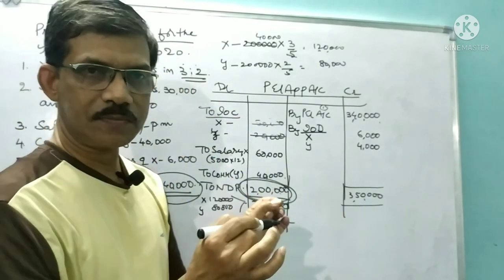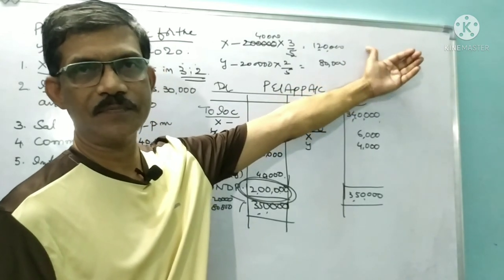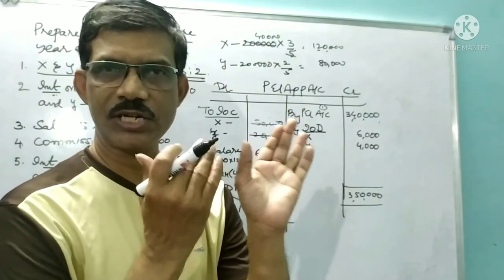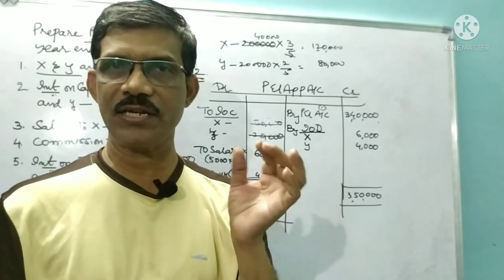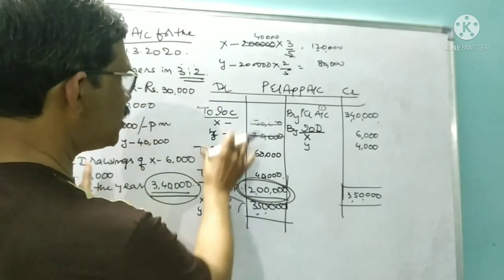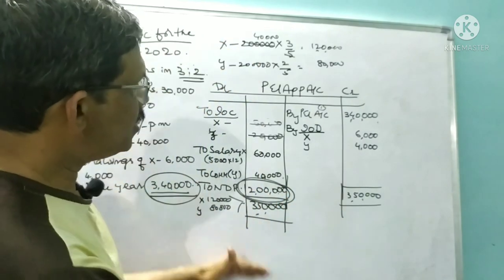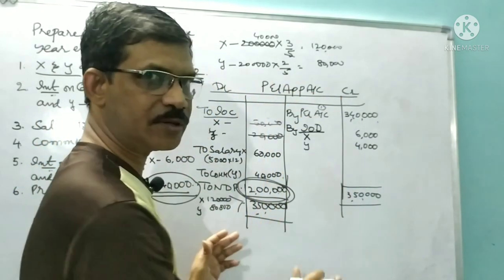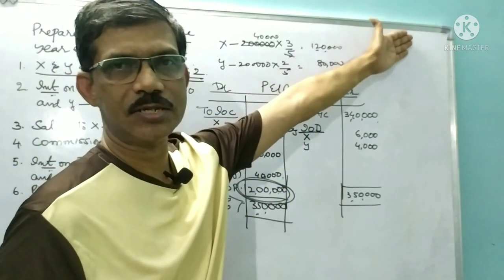How to rectify the mistakes in P&L appropriation account? We will discuss that in the past adjustments topic. P&L appropriation account is an extension of profit and loss account. The objective is to calculate net divisible profit, distributed to partners in the agreed ratio. If any mistakes are committed in P&L appropriation account preparation, the method to rectify them is past adjustments.